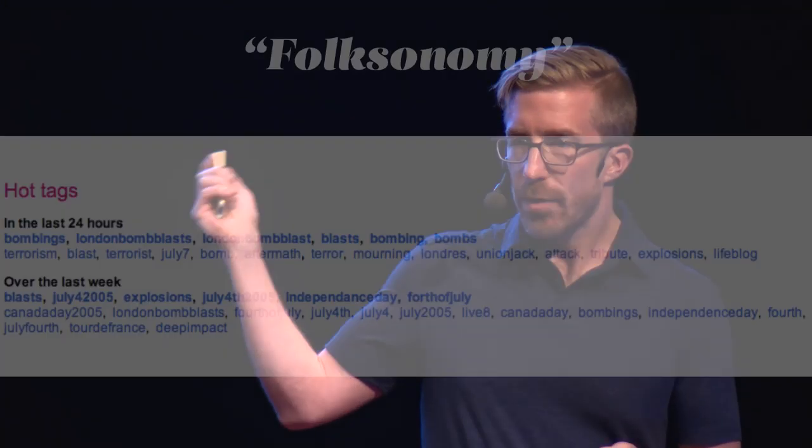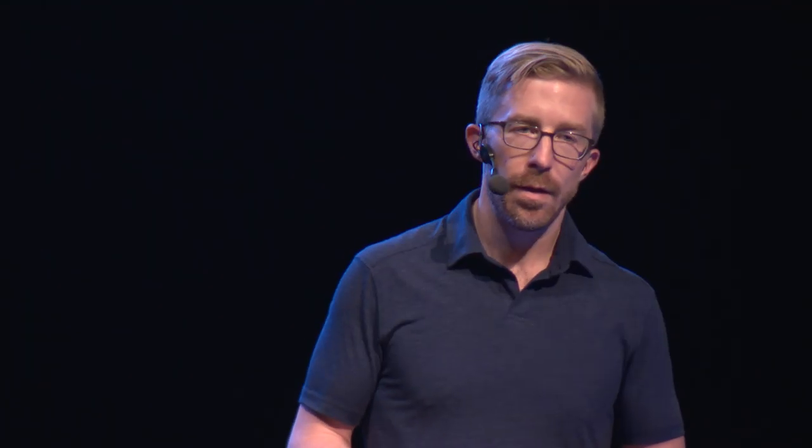We had also solved that problem on Flickr and other sites like Delicious, which was a link sharing service, with something called a folksonomy — a set of categories created by users in a bottoms-up fashion. In other words, you don't decide what the categories are before people decide how to label things; they do it in an ad hoc fashion. This is a screenshot from 2005 of trending tags on Flickr — the tags people were using to label their photos over a given weekend in July.